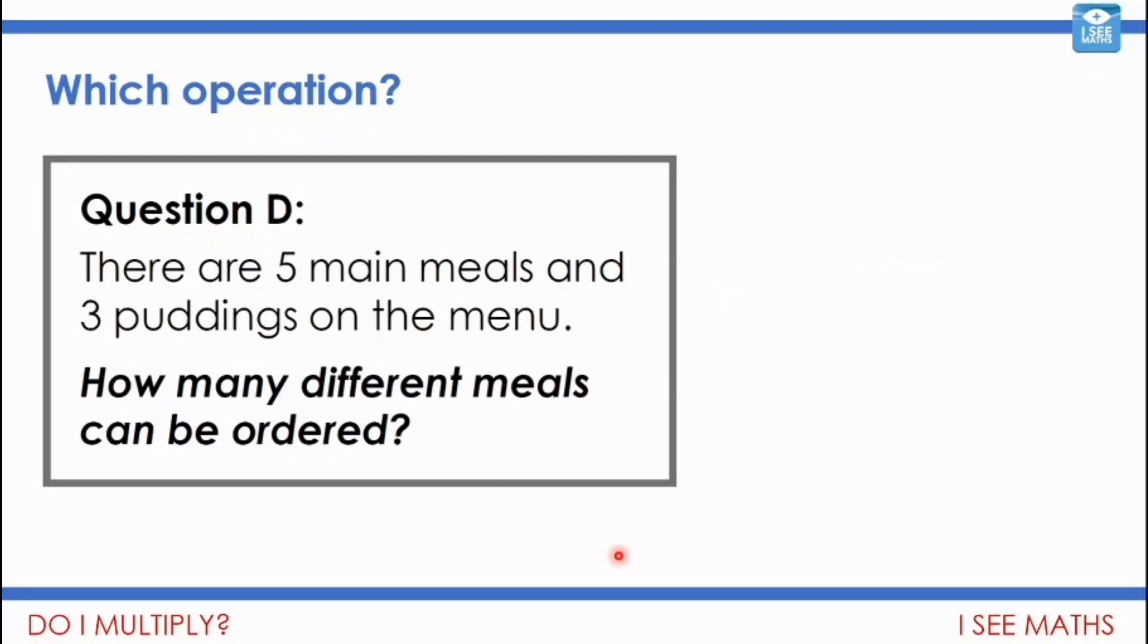Now, what about question D? There are 5 main meals and 3 puddings on the menu. How many different meals can be ordered? How are we going to work out how many different possible meals this time? So pause the video and have a think.